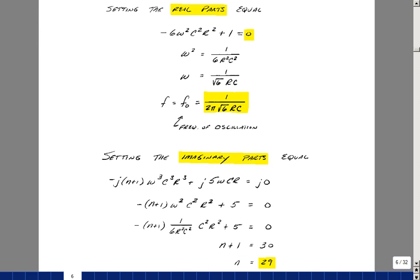Now I know at the frequency of oscillation, omega is equal to 1 over square root of 6 RC, or squaring that is 1 over 6 R squared C squared. So I'm just going to substitute that in right over here. That's going to cancel these two. And I'm left with then that, to put this on the other side of the equation, this becomes a plus, n plus 1 divided by 6 is equal to 5. Then cross multiply, and that gives me that n plus 1 is 30, or that n is 29.